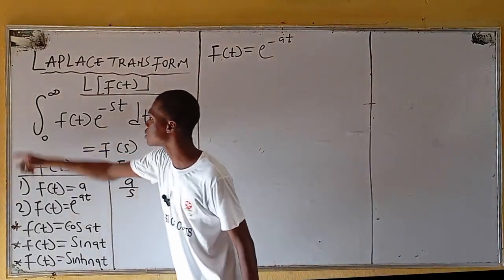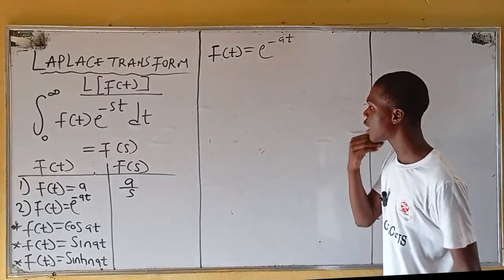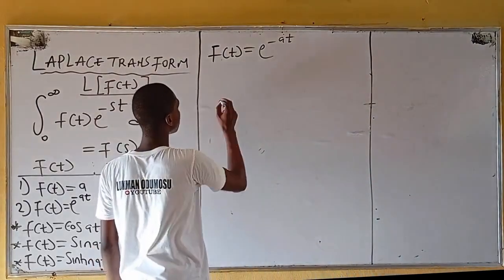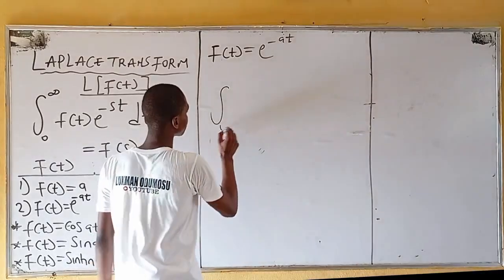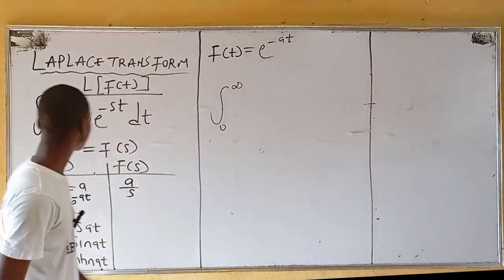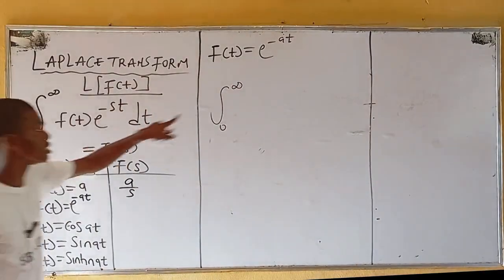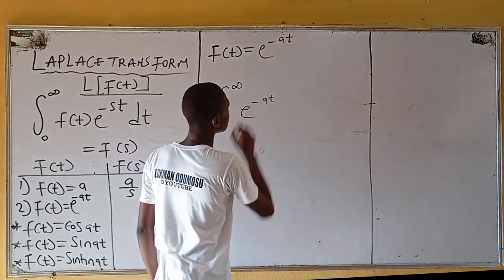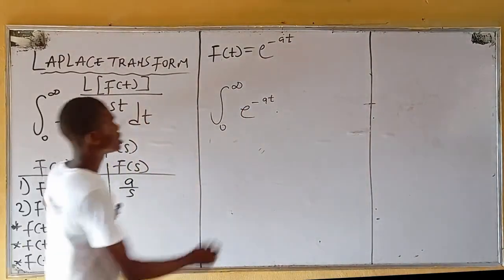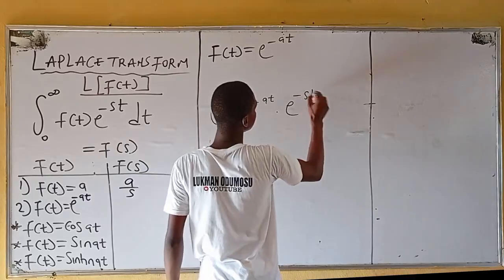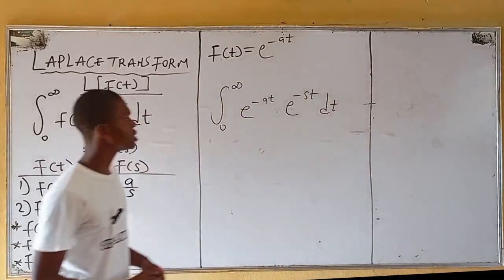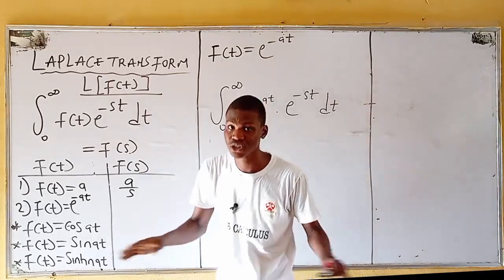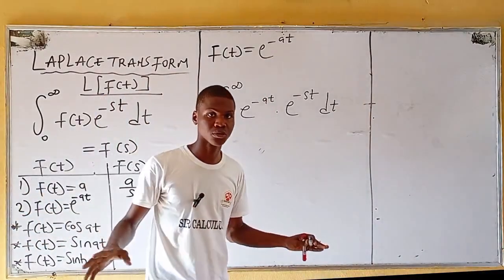In this case my f(t) is e^(-at), so my Laplace transform becomes the integral from zero to infinity. Ask yourself: what is f(t)? f(t) is given as e^(-at), so substitute e^(-at) multiplied by e^(-st) dt. You must be a master of your integration — that is basically what we are using here.